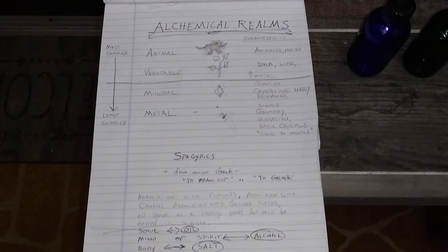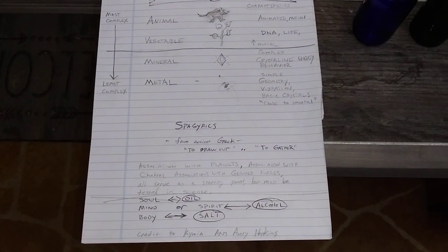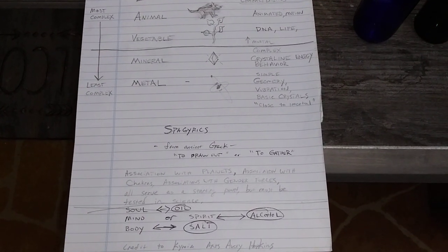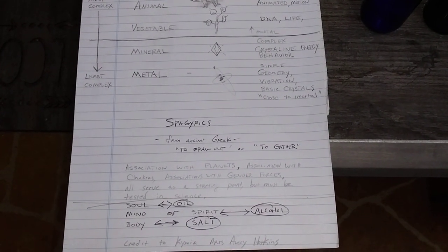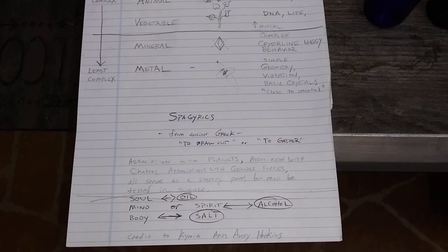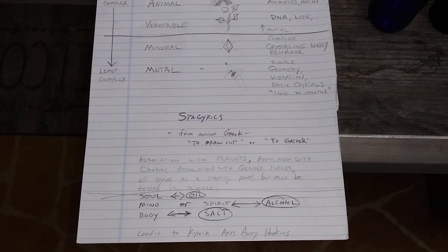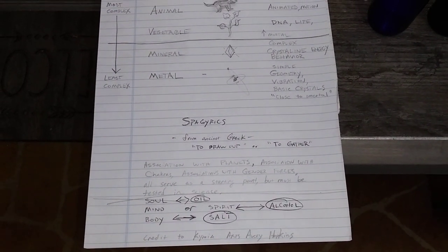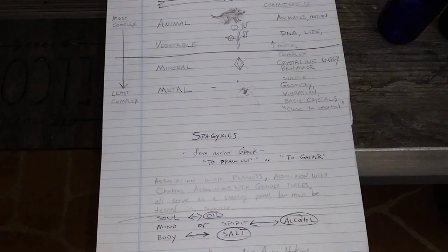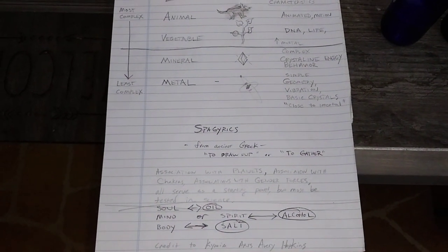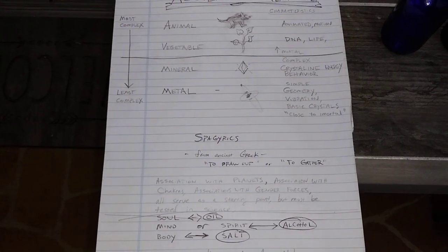Spagyric is generally associated with alchemical medicine, but the word spagyric comes from ancient Greek and it means to draw out or to gather. This is the idea where you're getting something from nature, extracting its essence, and then using it to apply to your body, mind, or spirit.